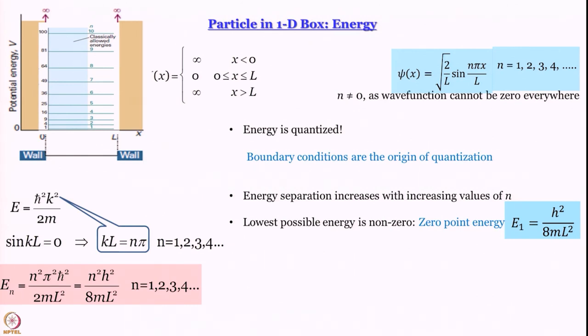A quantum free particle can never be at rest, and it can never be at rest because if it were, it would violate the uncertainty principle. If it came to rest at some position, x would be defined precisely — delta x is 0 — and since it has come to rest completely, the momentum is also 0, so delta x times delta p is 0, which violates the uncertainty principle. We will talk more about uncertainty principle later when we discuss operators and demonstrate it using position and momentum operators.